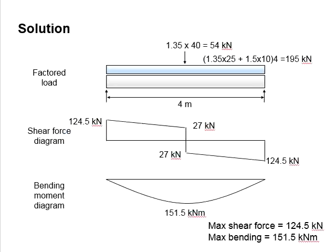To solve this question, first you need to factor the actions. The point load here is a permanent action. Therefore, for the ultimate limit state, it is to be multiplied with a 1.35 factor.